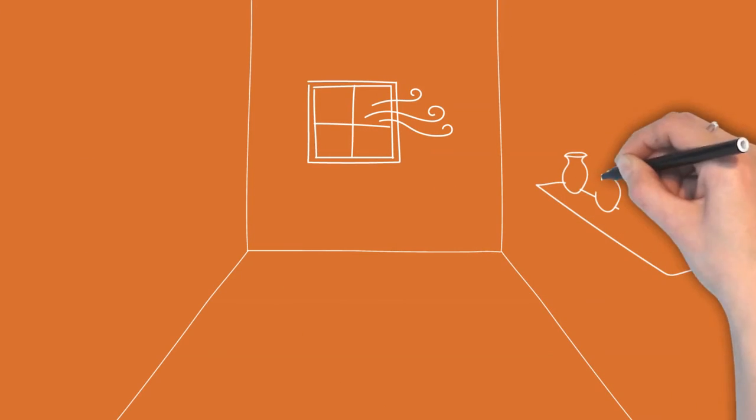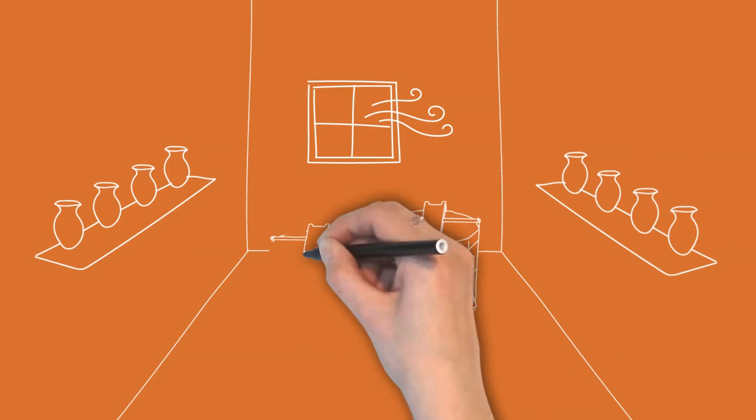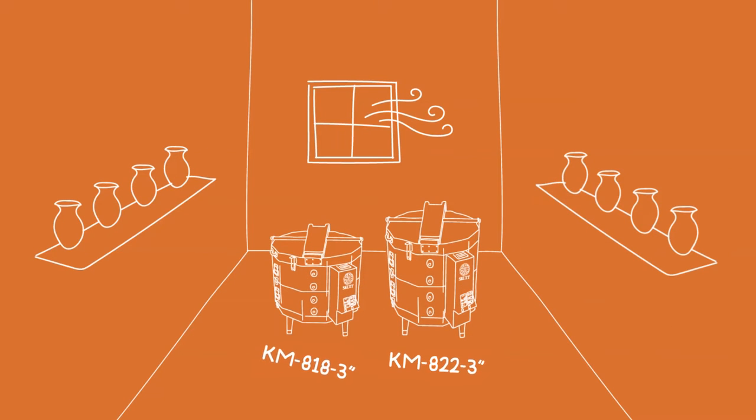For home studios, we recommend models 818 and 822. They are relatively small and have a good cost-benefit ratio.